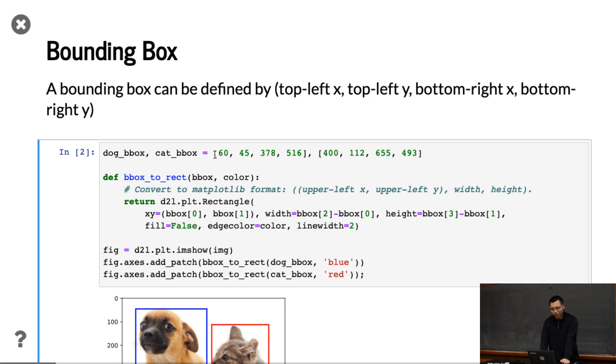You can see that the bounding box can be defined by four numbers. This is a dog bounding box. The bbox is called bounding box, and the cat bbox - it's a common name for using detections.